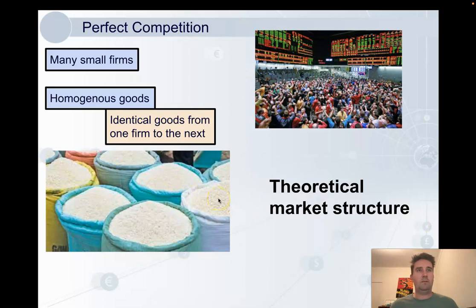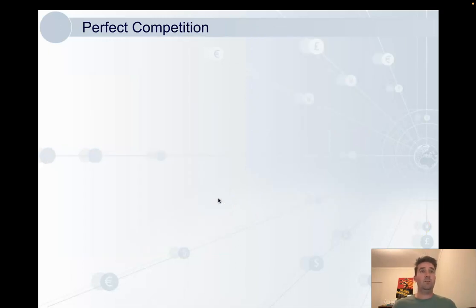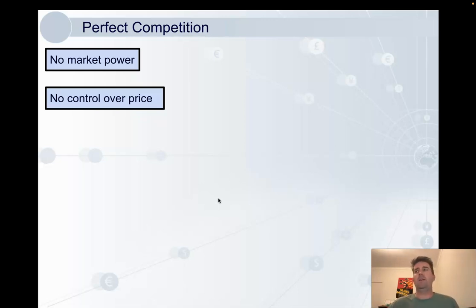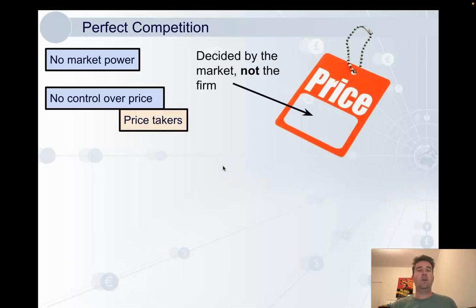Another aspect of perfect competition is that each firm has no control over price — so no market power. This is due to the goods being homogenous; they're exactly the same. If I don't care which firm I buy from, what I'll care about is the price. If everyone's selling the same thing, why would I pay more from one firm than another? I'll just go to the lowest price. We say firms in perfect competition are price takers — the price is decided by the market, not the firm.